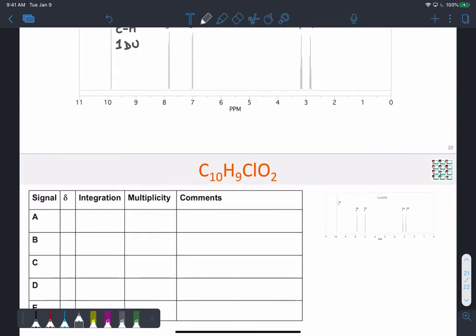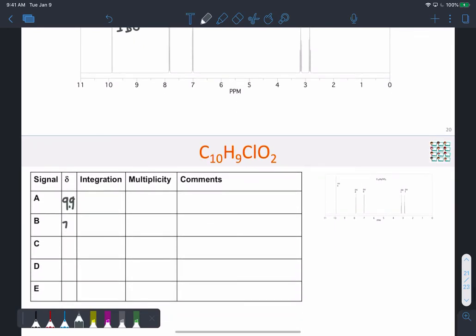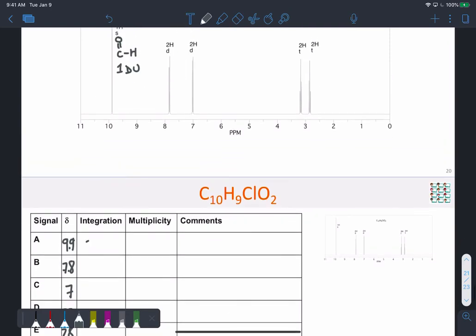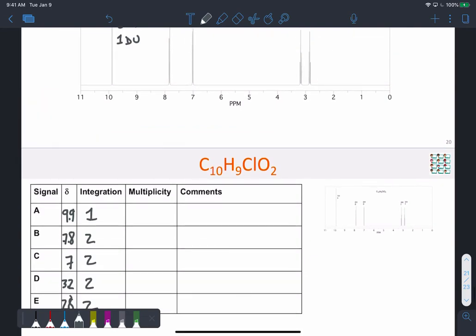Okay, so let's copy out the information we have. So there's that at around 7.8. And we're told the integration here. So there's 1H, 2, 2, 2, 2. So singlet, no non-equivalent proton neighbors nearby.